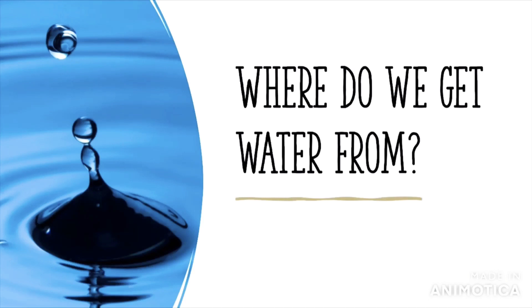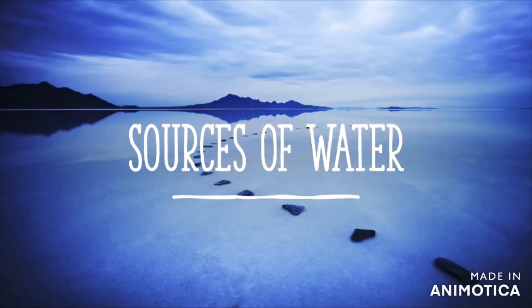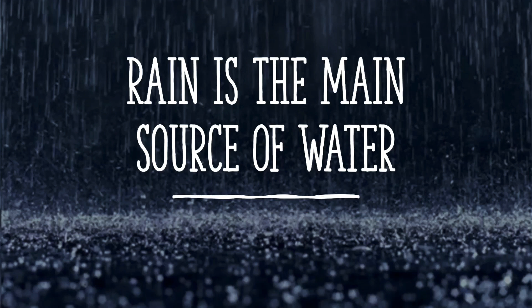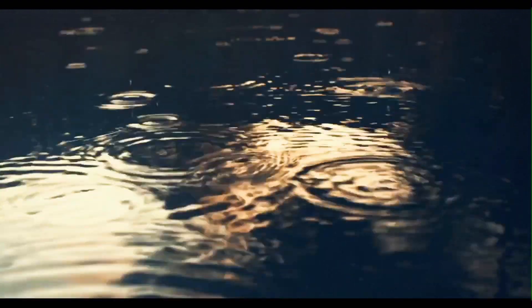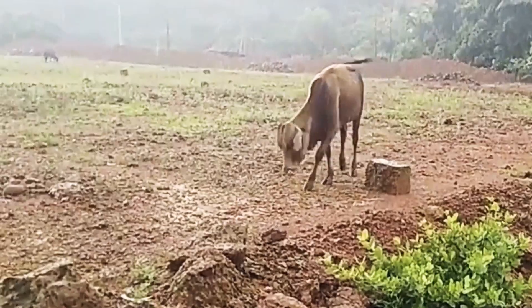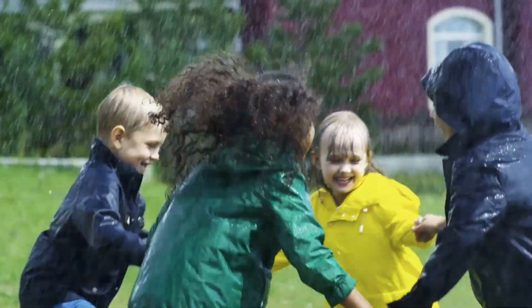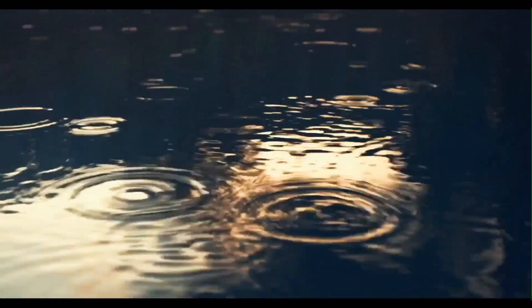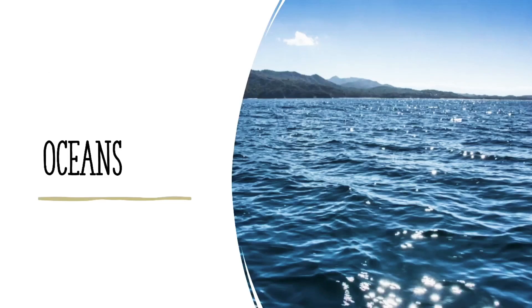But where do we get this water from? Today we are going to take a look at all the places we get water from. There are various sources of water. Rain is the main source of water. Rain falls on Earth and fills rivers, lakes, ponds, and oceans. If there was no rain, plants, animals, and people would not have water.